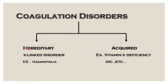Hereditary coagulation disorders are mainly qualitative and quantitative, of which X-linked disorders are the most common — an example of which is Haemophilia. We are not going to go much into acquired coagulation disorders, so let us just note the examples, which are Vitamin K deficiency and disseminated intravascular coagulation.